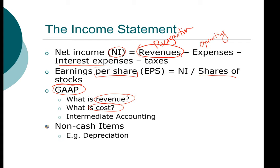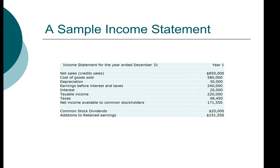Next, we're going to take a look at a sample income statement. The income statement is considered a flows statement, which means the numbers represent the flow of revenue and expenses over a time period. In this example, the time period is for the entire year ended December 31st for year one. The $850,000 in revenue you see was generated over the entire year. Now let's look at expenses — there are different types.